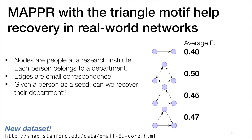We also looked at several real-world networks. For example, we looked at an email network where nodes are people at a research institute and each person belongs to a department. Given a person as a seed, we ask: can we recover their department given the network structure? Again, we find that using triangular motifs provides a vast improvement over simply using edges in order to recover these departments. As an added bonus, we've released this dataset along with the paper.